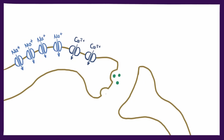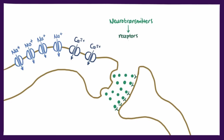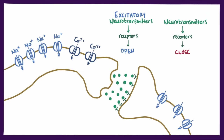The way this ion flow is controlled is through neurotransmitters, a type of signaling molecule, and receptors. Neurotransmitters bind to the receptors and basically tell the cell to either open up the ion channels and relay the electrical message, called excitatory neurotransmitters, or close the ion channels and stop the electrical message, called inhibitory neurotransmitters.